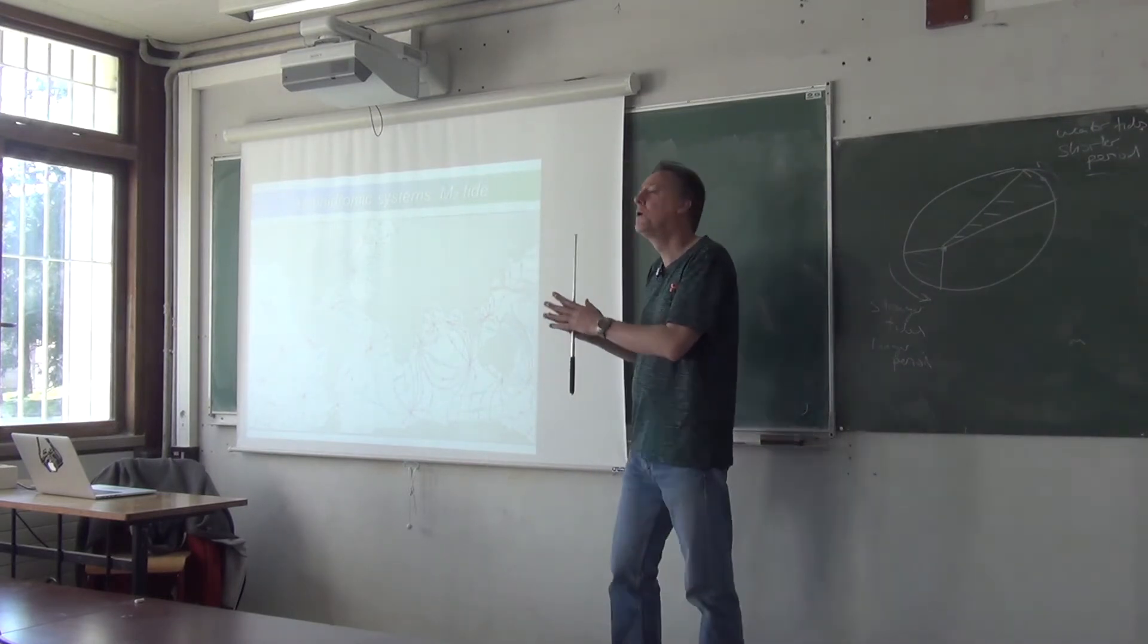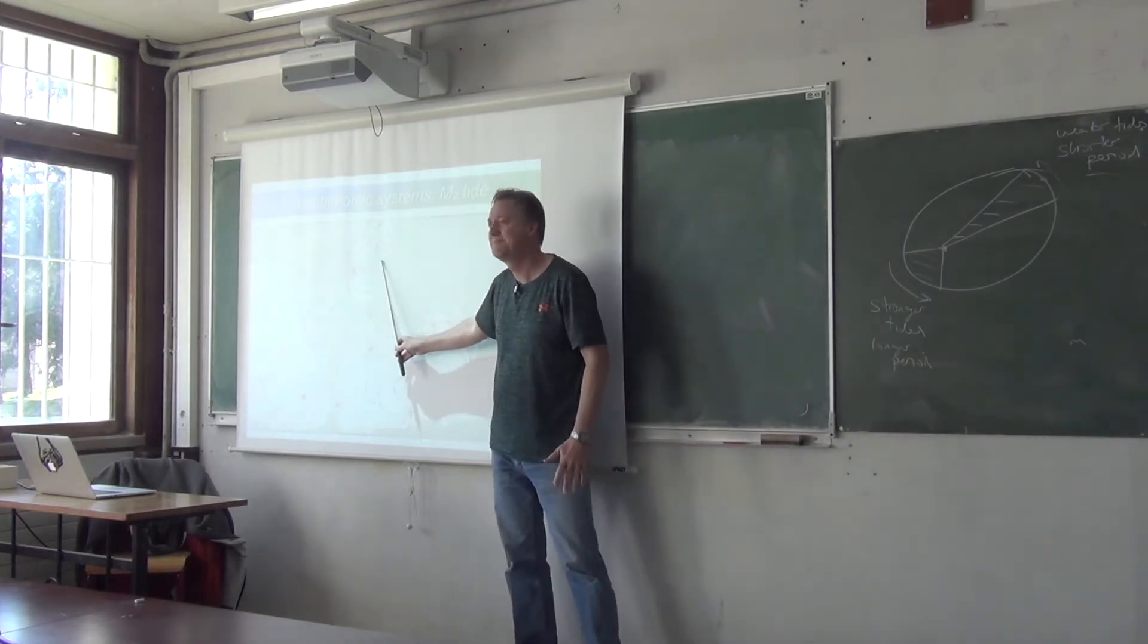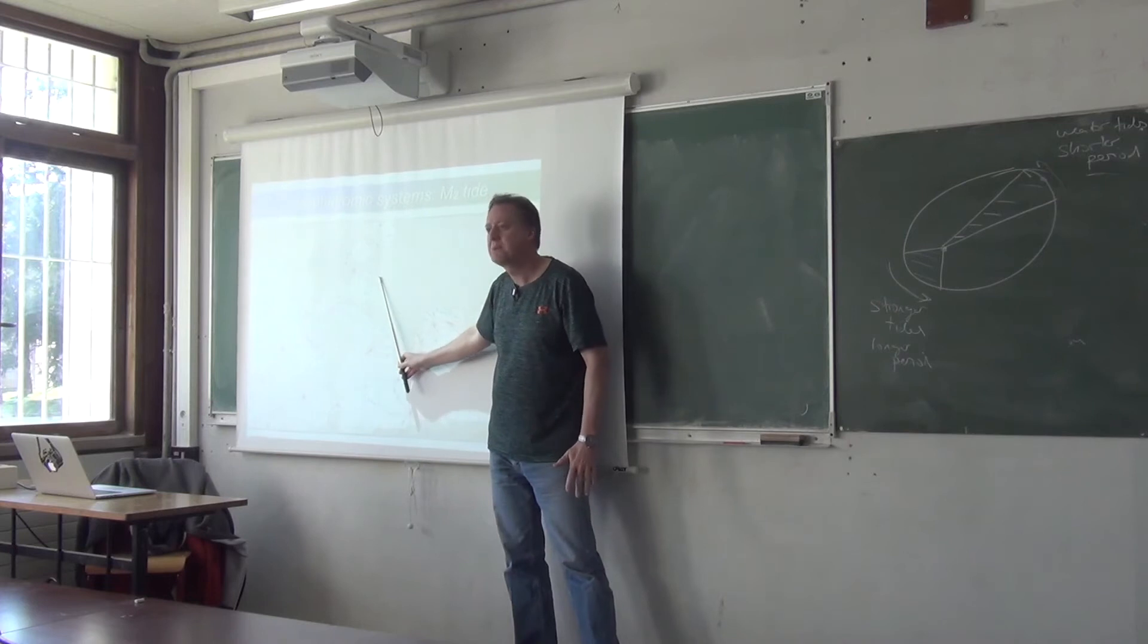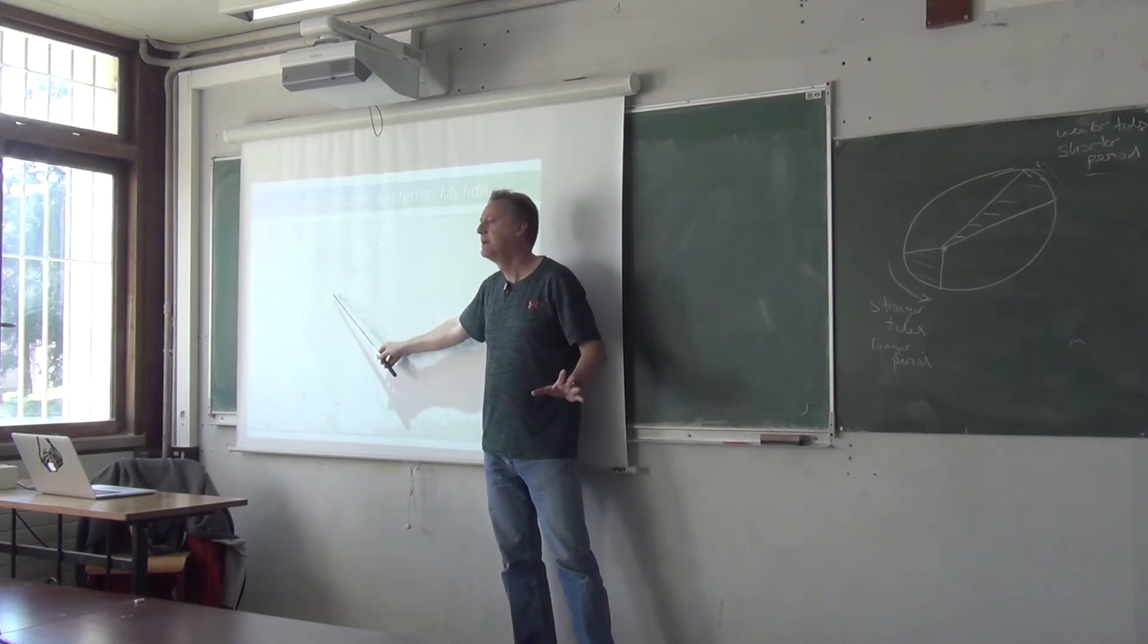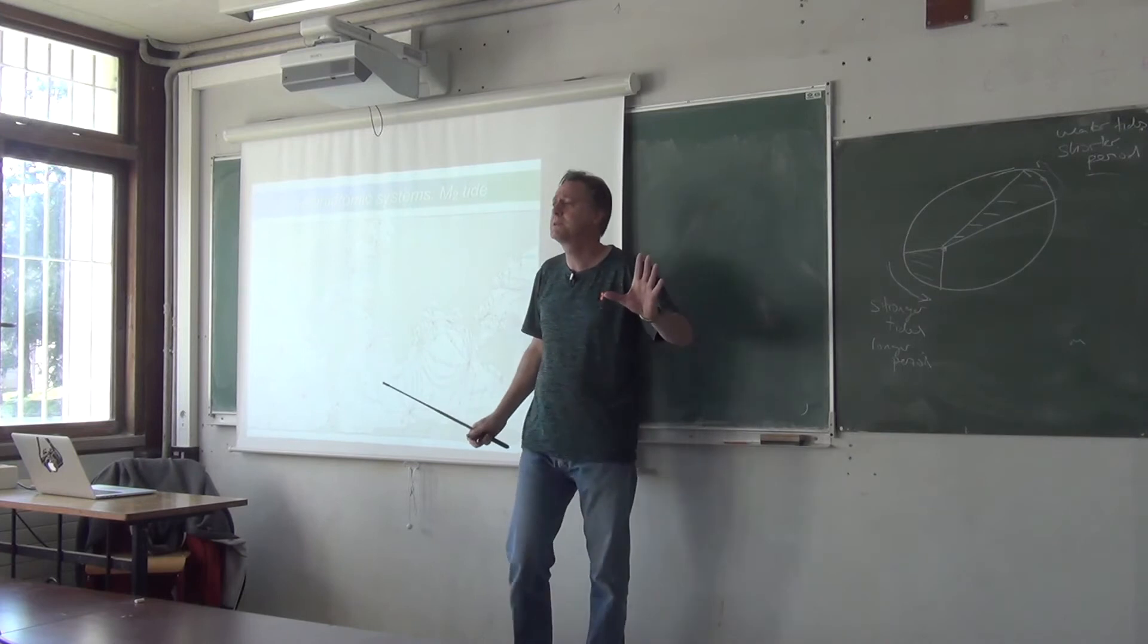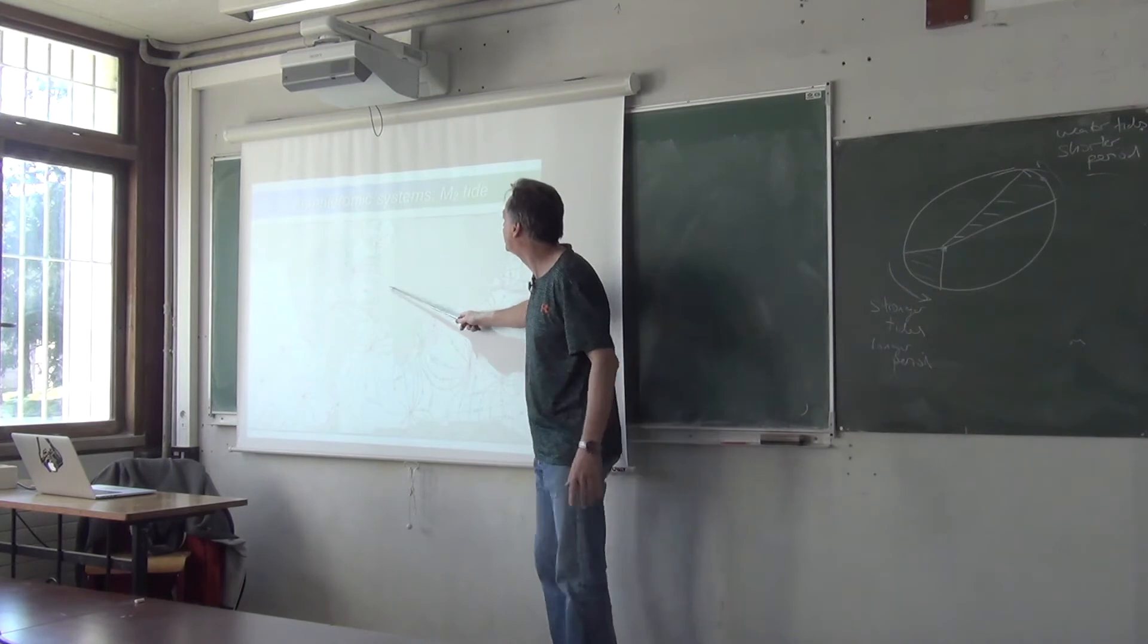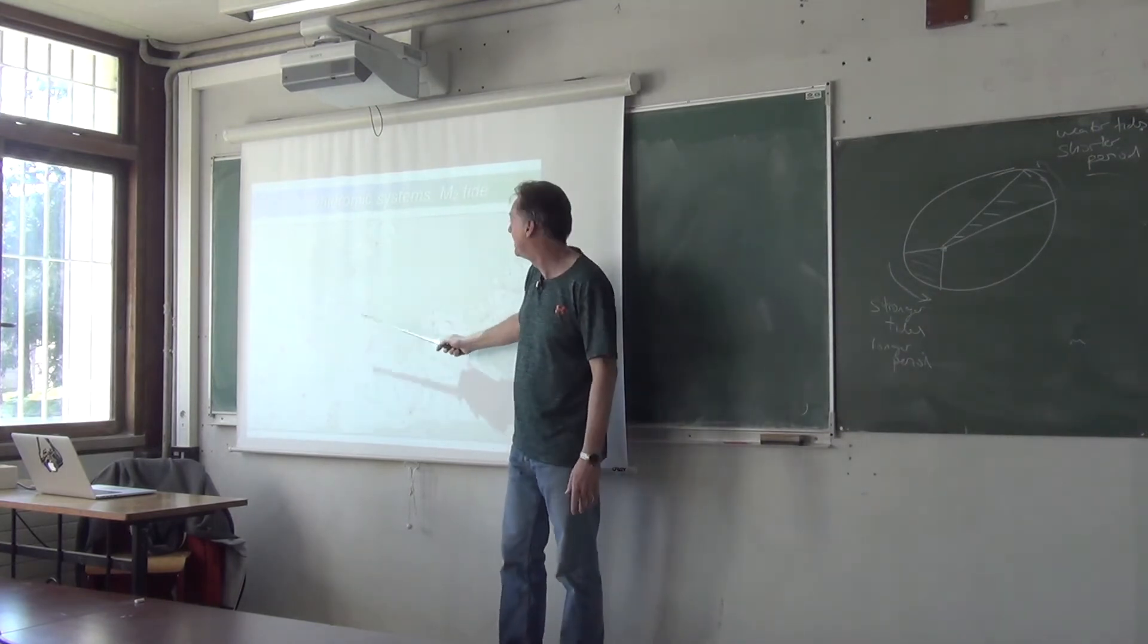And we said that in the northern hemisphere, that Kelvin wave propagates with the coast to the right. And that's exactly what's happening here. The tide propagates around the coast as a Kelvin wave. It's just a gravity wave propagating around the coast. It's a gravity wave that has been forced by gravitational force.